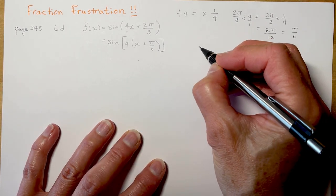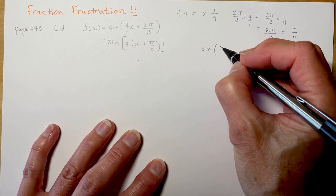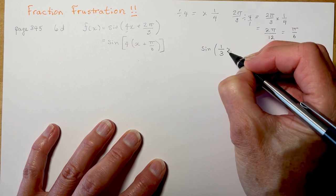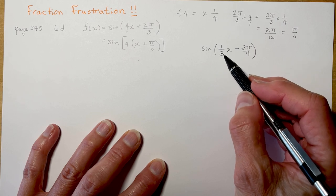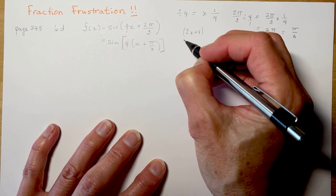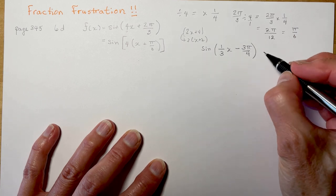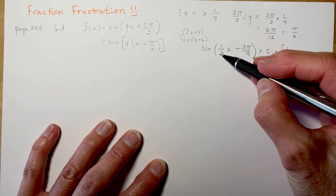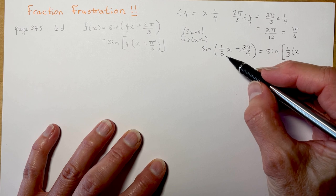Now let's change the question. Let's say I have sin of (1/3 x − 3π/4). I need to factor out this 1/3. Factoring just means you're dividing — for example, 2x + 4 factored gives 2(x + 2), so you divided each term by 2. This time I'm dividing by 1/3. For the x term, dividing 1/3·x by 1/3 gives x. And I have minus 3π/4 divided by 1/3.